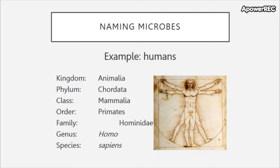Of course there must be a system for keeping track of all these microbes and living organisms in general. We classify living organisms into different groups. The organization goes: Kingdom, Phylum, Class, Order, Family, Genus, Species. For humans that would be Animalia, Chordata, Mammalia, Primates, Hominidae, Homo, and Sapiens. Each successive group contains fewer and fewer members. The Genus-species category is the full name given when referring to an organism — so we are Homo sapiens.